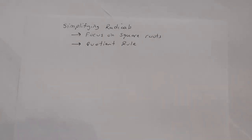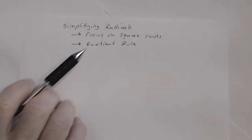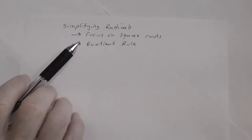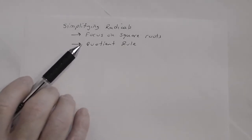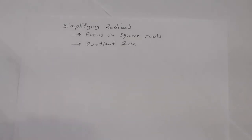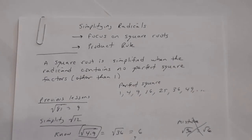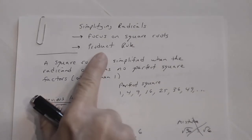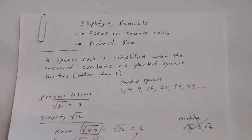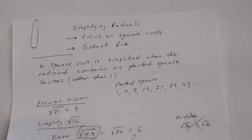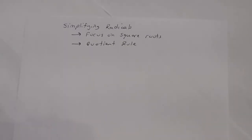In this lesson we're going to continue our study on simplifying radicals, focusing strictly on square roots. In this lesson we're going to look at what's called the quotient rule. In the previous lesson we looked at the product rule, and so in this lesson we're going to look at the quotient rule.